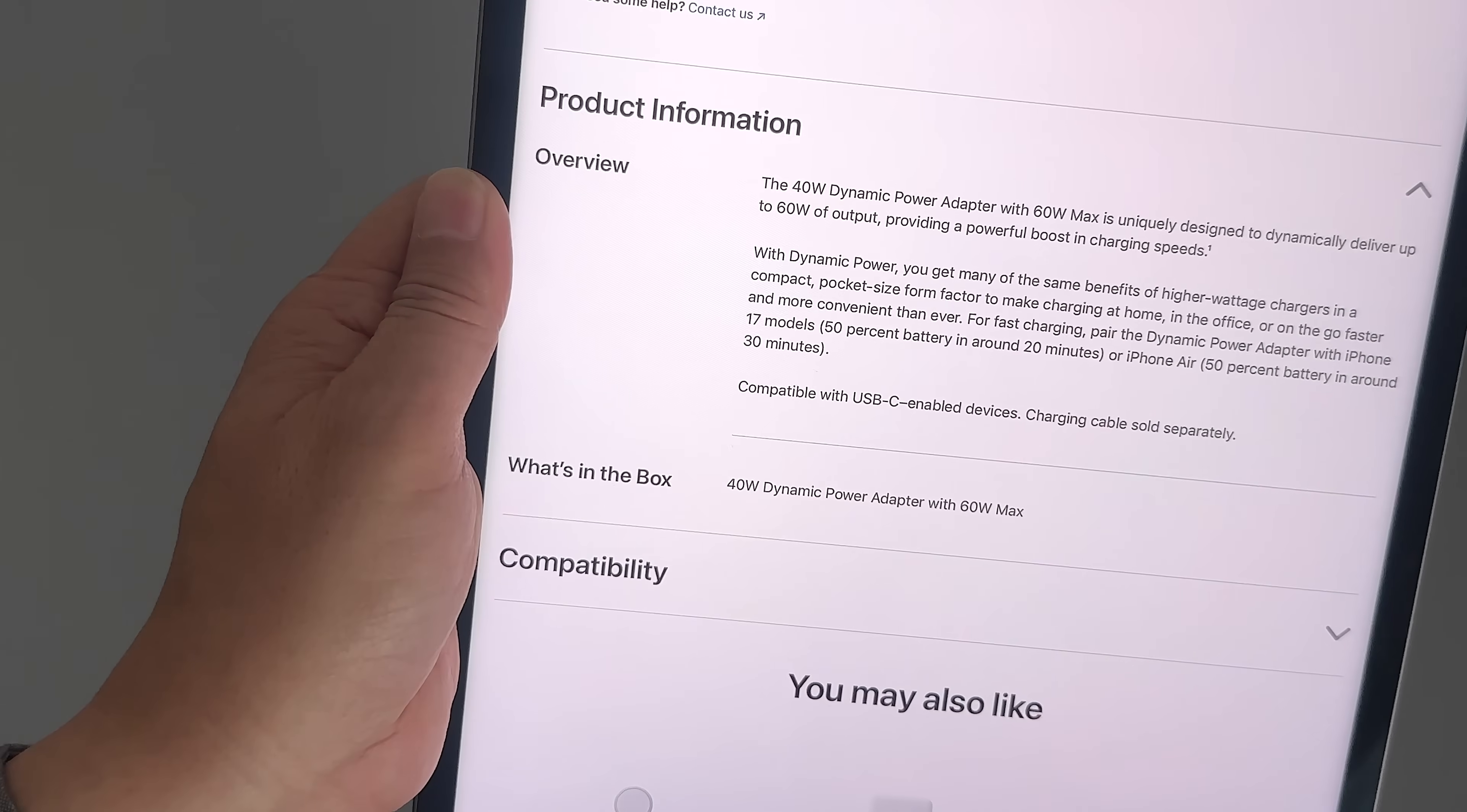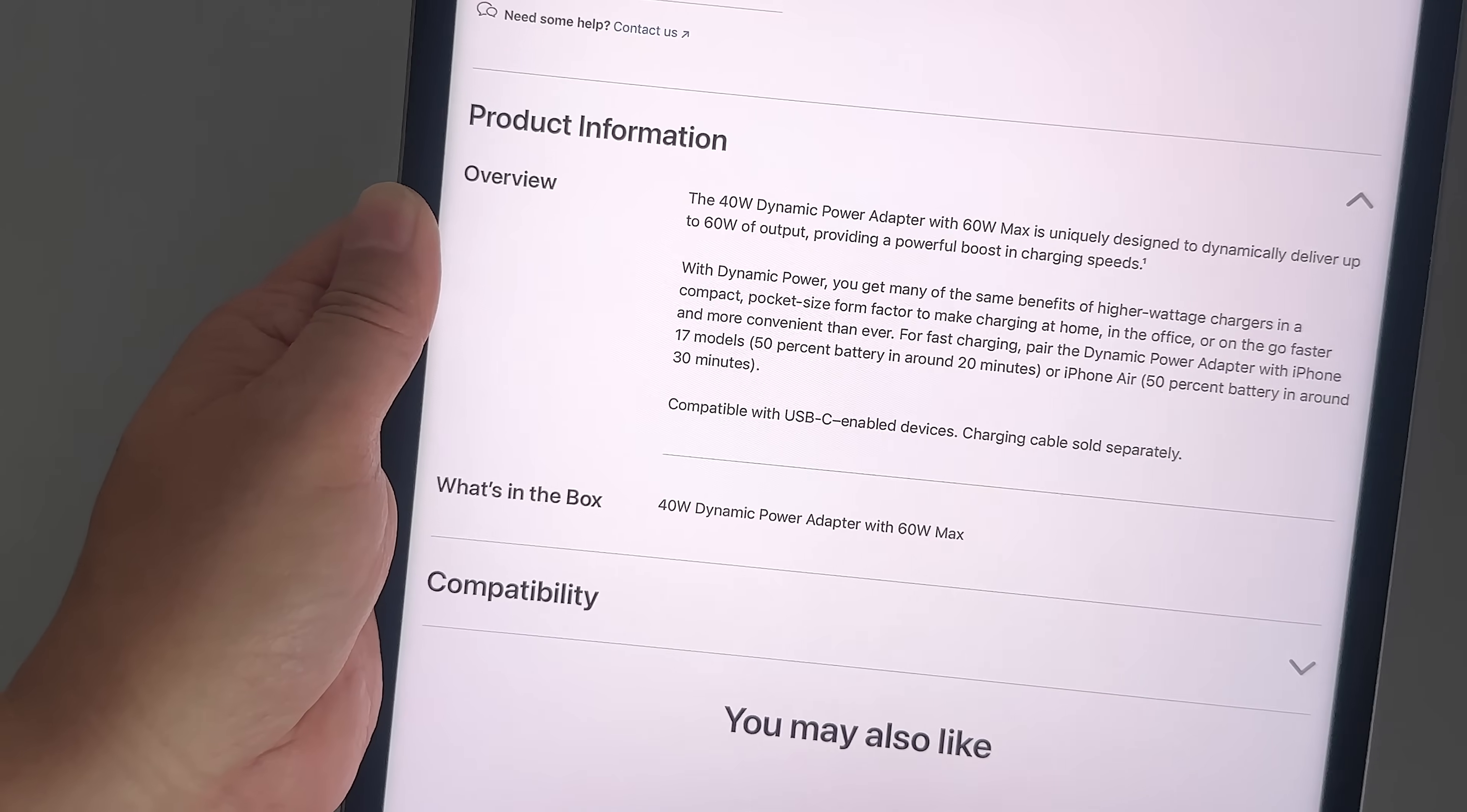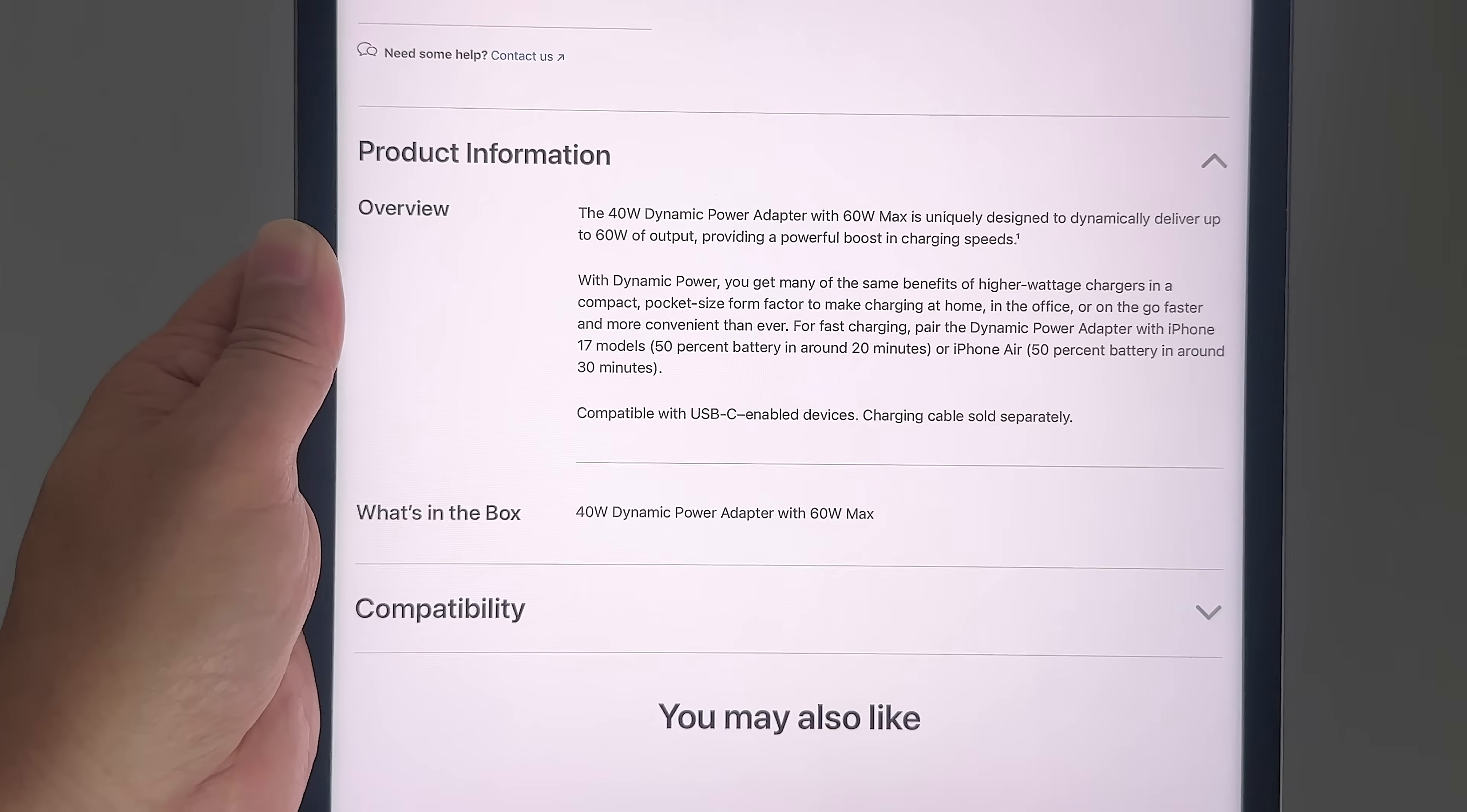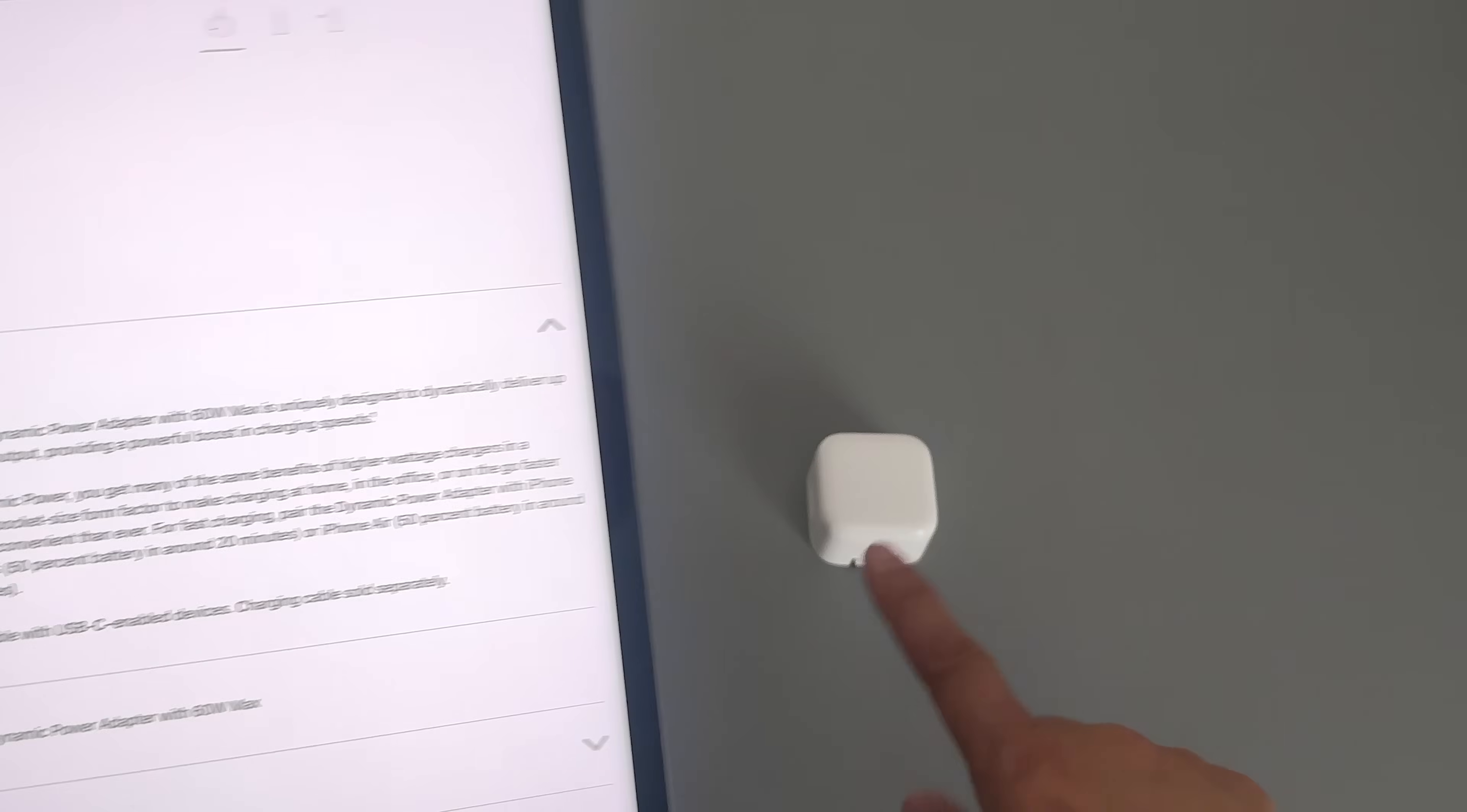So they're saying with the dynamic power, in order to get that fast 50% battery within about 20 minutes, they want you to have the iPhone 17. I don't know if this is Apple's ploy to sell more iPhone 17s or iPhone Airs, and maybe older iPhones will actually charge almost as fast or just as fast. Or is it a matter of the new iPhone models having some kind of special mechanism that takes advantage of this charger better.